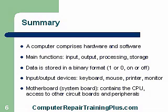We have storage — both primary storage and secondary storage. Primary being the RAM, secondary being the hard drive. Data is stored in a binary format, ones and zeros, on or off. The computer doesn't understand English or any other language; its language is ones and zeros. It runs extremely fast and can manipulate these ones and zeros in anything we need.